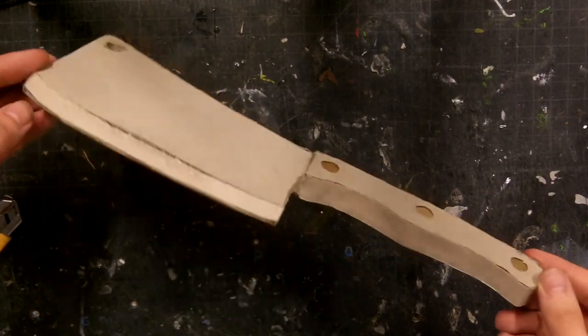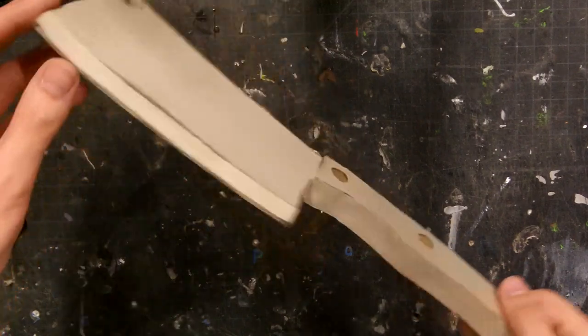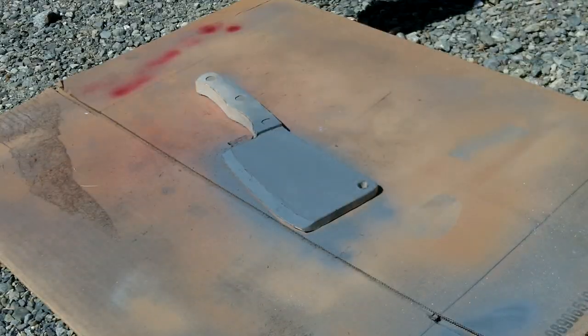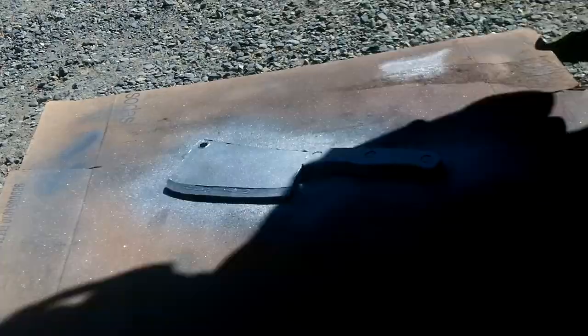Then I covered up all the corrugation and gaps with some cardboard. Then I primed it with some flat gray primer. Then I painted the whole thing metallic silver.